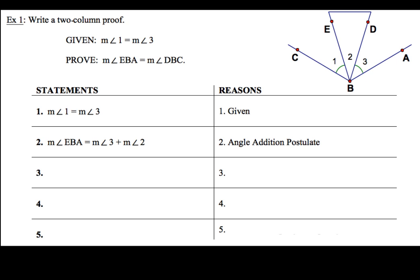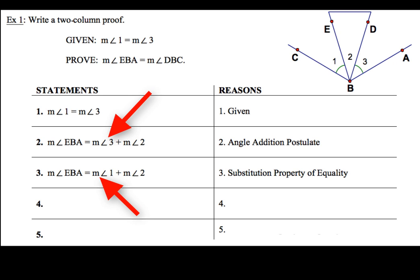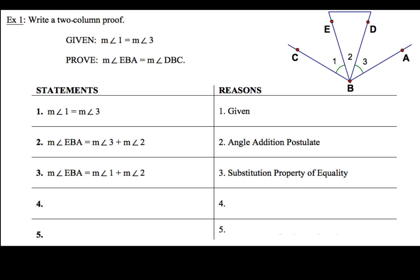Now, if we take a look at statements 1 and 2, there's one thing that's the same in both of those. I'm going to use the substitution property of equality. I'll take out the measure of angle 3 and replace it with the measure of angle 1. The reason is the substitution property of equality. There are my first three statements and reasons.